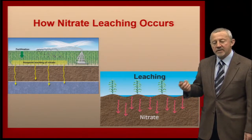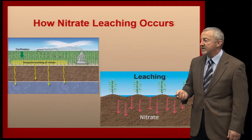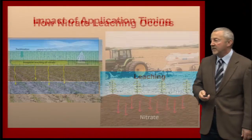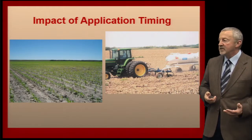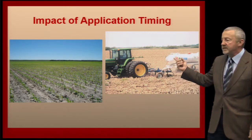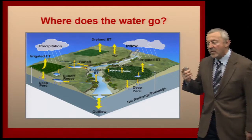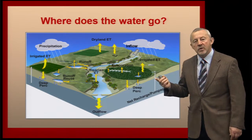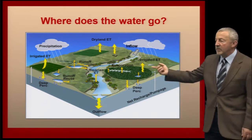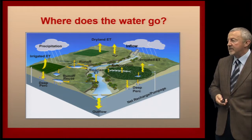We're also going to talk about how nitrate leaching occurs with the movement of water through the profile. If we have nitrogen available, we're going to take some of that nitrogen down through the profile and out the bottom of our root zone. We'll talk about application timing — when is the best time to put the fertilizer on — and also the methods used to apply that material. Then we're going to talk about water management: where does the water go in our watersheds as we apply water via irrigation or receive rainfall and surface runoff.